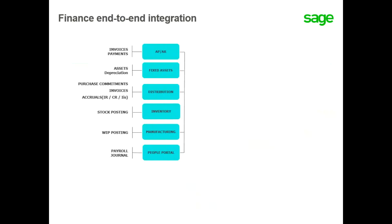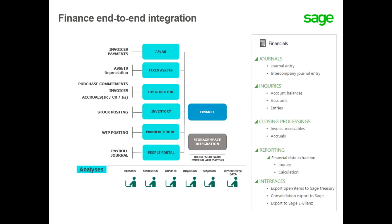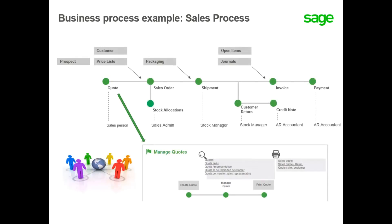Here you see the different actions carried out in each module in relation to the finance module, where purchase and sales or distribution create an invoice or a credit note. The accounting department creates an open item. Once it's validated, it can be included in the payment workflow. The sales process shows the interaction of all persons involved and the flow of functions from creating the quote and the stock allocation until the receipt of payment, which shows there are multiple ways to handle a sale in the system depending on the setup.